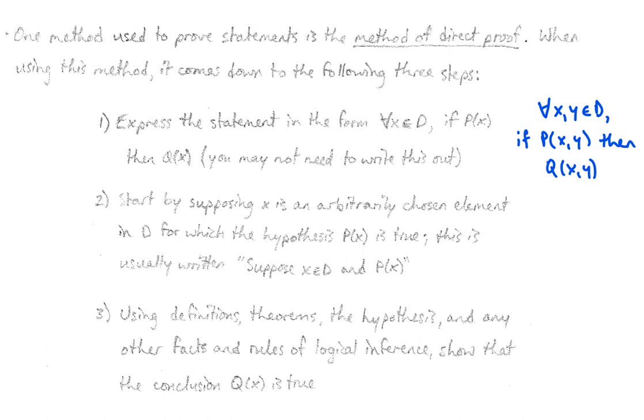Three, the third and final step, which is kind of all-encompassing and broad, is you're going to use known definitions, known theorems, what you've assumed in your hypotheses, and any other facts and rules of logical inference. You're going to use all that stuff to show that your conclusion Q(x) has to be true.